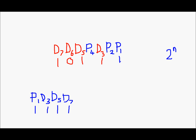Next, p2 is set in such a way that even parity is established for p2, d3, d6, and d7. d3 is 1, d6 is 0, and d7 is 1. For even parity, p2 will have to be 0. So p2 is 0.